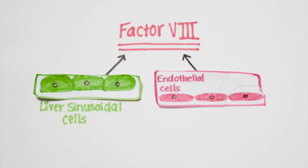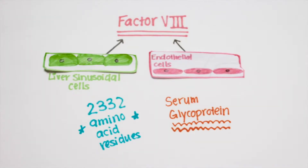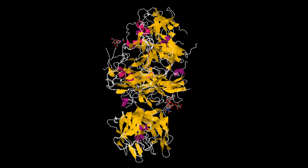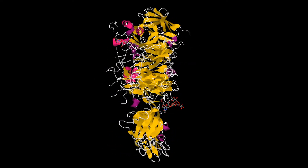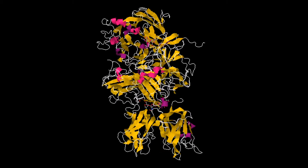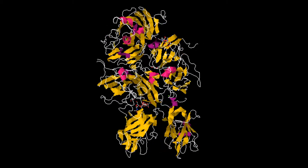Factor VIII is produced in liver sinusoidal cells and endothelial cells outside of the liver throughout the body. It's a serum glycoprotein, which in its full unprocessed length consists of 2,332 amino acid residues and 6 protein domains: A1, A2, B,